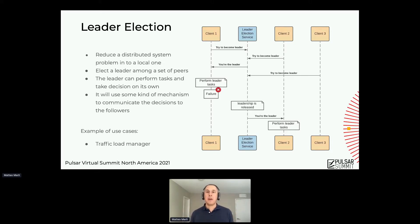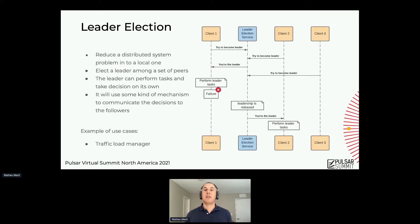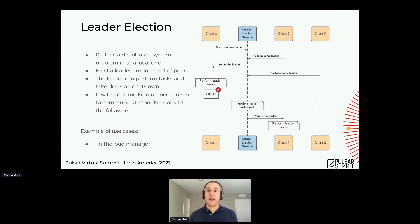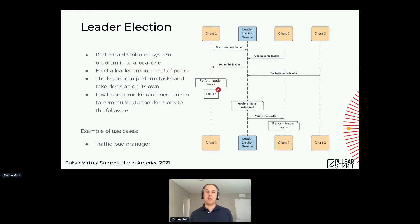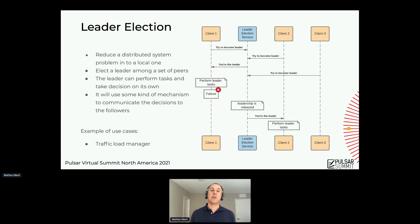Once this node thinks that it's the leader, it will do all these tasks. If this client fails, the leader election service will automatically release the leadership. So now it is released and it will select another available client and tell it that you are the leader. This new client will recover and start doing the same set of tasks.